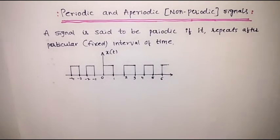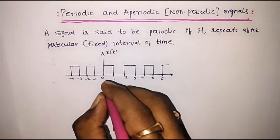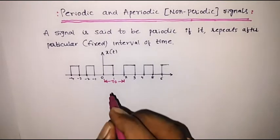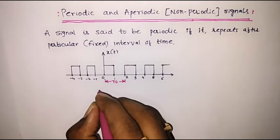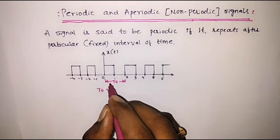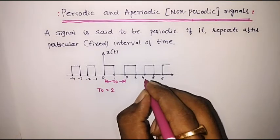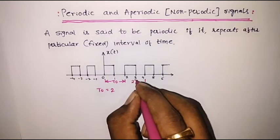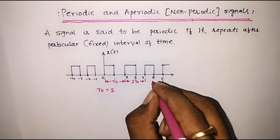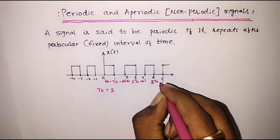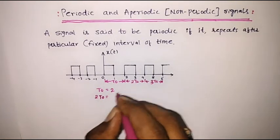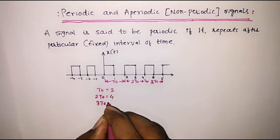Observe, here I have shown one waveform. I will call this as t0. Here t0 is the width of the first cycle and its value is t0 = 2 minus 0, that is 2. I will call this the first cycle with value t0, this the second cycle with value 2t0, and similarly this is the third cycle with value 3t0. So the value of 2t0 is 2 into 2, that is 4, and 3t0 is 6.